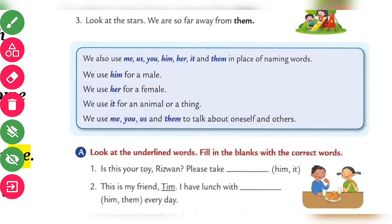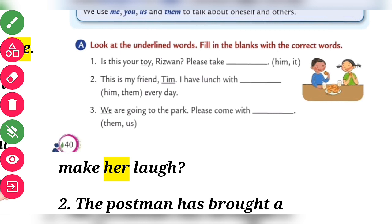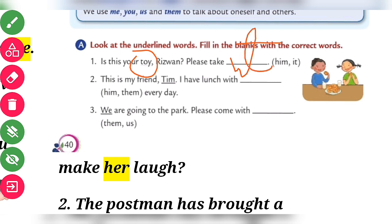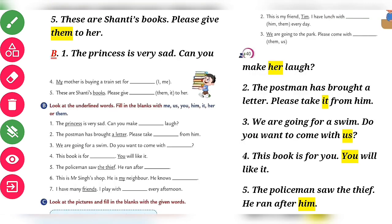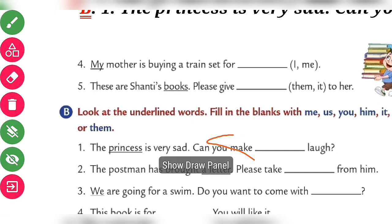Now look at the pictures, underline words, and fill in the blanks. First sentence: 'Is it your choice?' — it is talking about a thing, so the answer is 'it,' take it. Second sentence: 'This is my friend Tim, I have lunch with him' — the answer is 'him.' We are going to the park, please come with us.